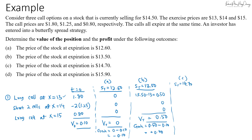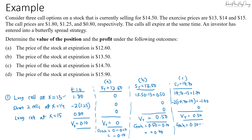In scenario C, the spot price is $14.70. The long call at $13 is exercised: payoff = $14.70 − $13 = $1.70. The two short calls at $14 are also in the money: payoff = −2 × ($14.70 − $14) = −$1.40. The long call at $15 is out of the money. The total value at expiration is $1.70 − $1.40 = $0.30, so the gain is $0.30 − $0.10 = $0.20.